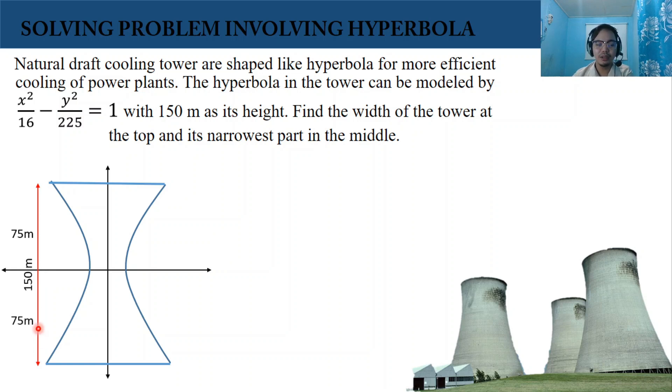Let's compute first the narrowest part because that is the easiest part to do. We have our standard equation x squared over 16 minus y squared over 225 equals 1. Let's find the value of a. A squared equals 16, therefore a is 4.